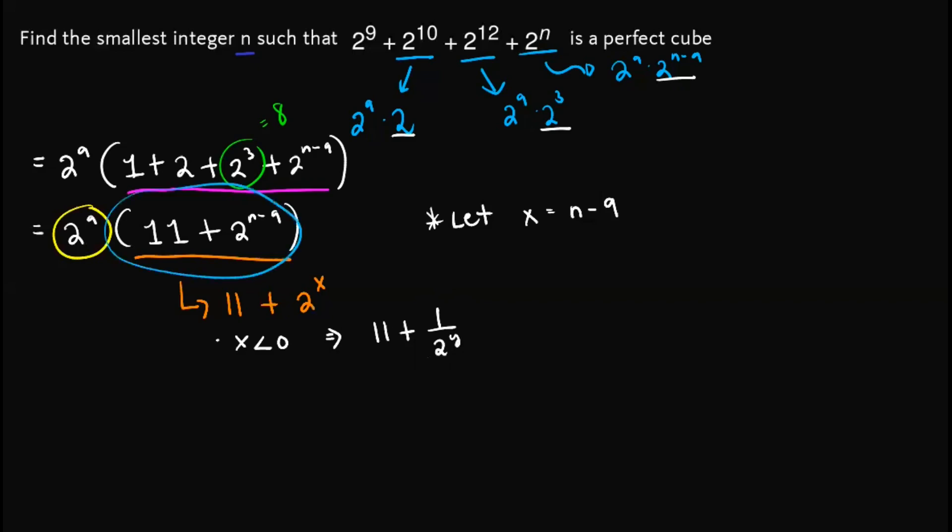Now observe here that this one is problematic. Since for this expression here, for this one to be a perfect cube, it must be an integer. But since it becomes a fraction, then it cannot be an integer. So we cannot consider cases wherein x is less than 0.